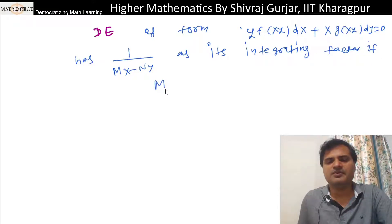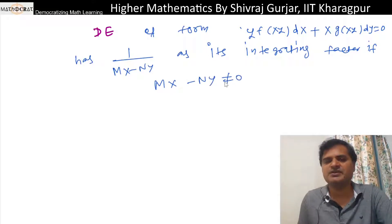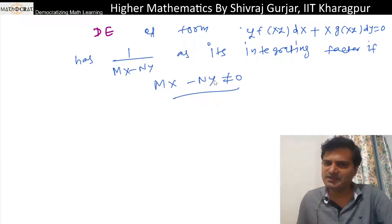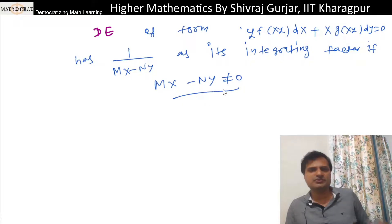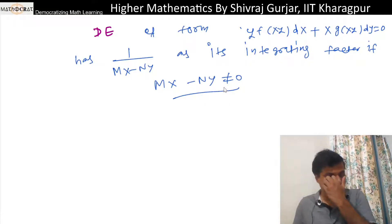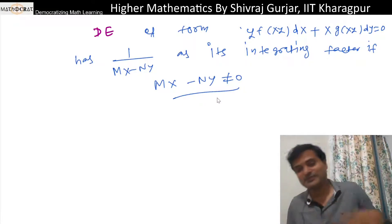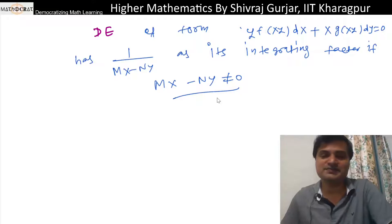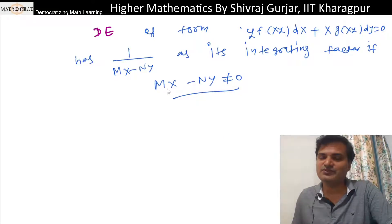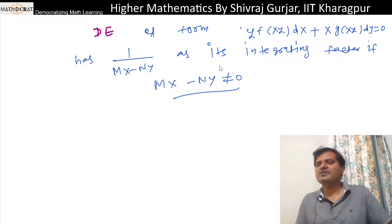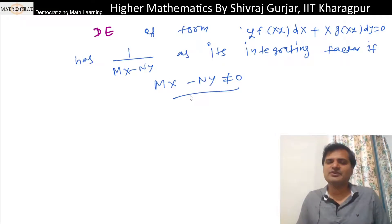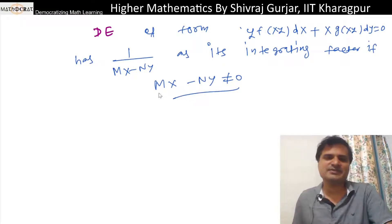If Mx minus Ny is not zero — otherwise if this is zero then the differential equation solution is very easy and I will leave that as a practice for you. Hint: you can see M by N — put the value of M/N into Mdx, it's that easy.